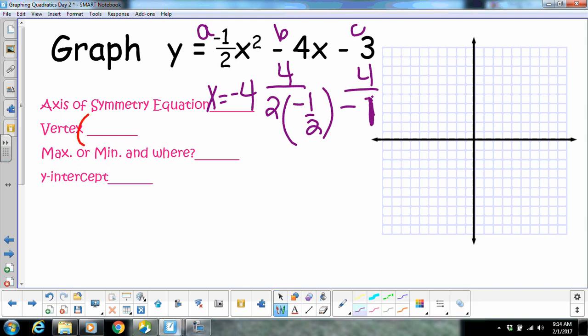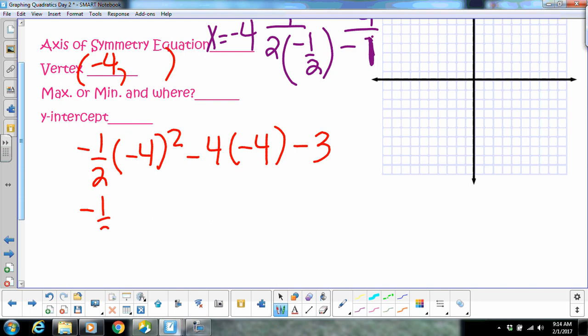Alright, vertex, so we know our x value is negative four. I'm going to work this out down here, just so you can see my work. So, it's going to be negative one-half times negative four squared minus four times negative four minus three. Again, stop thinking that this is so hard. What's negative four squared? 16. That turns into a positive 16. So, what's half of 16? Eight. And it would be negative eight. Minus 16. Okay, so negative eight plus 16 gives me positive eight. Positive eight minus three gives me five. There's your vertex.